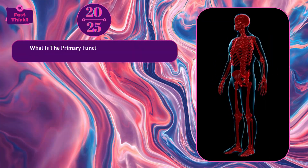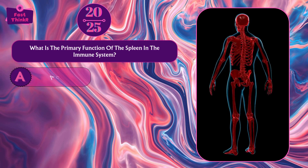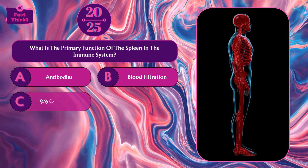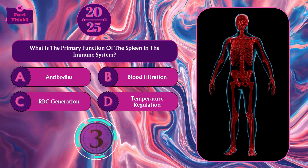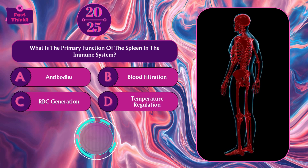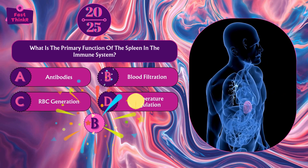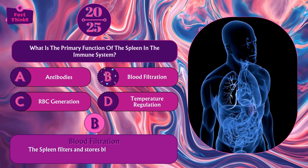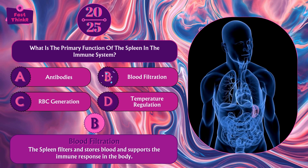What is the primary function of the spleen in the immune system? Antibodies, blood filtration, RBC generation, or temperature regulation? Option B — blood filtration. The spleen filters and stores blood and supports the immune response in the body.